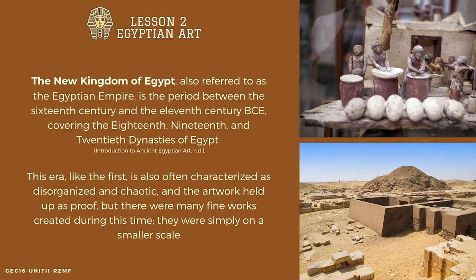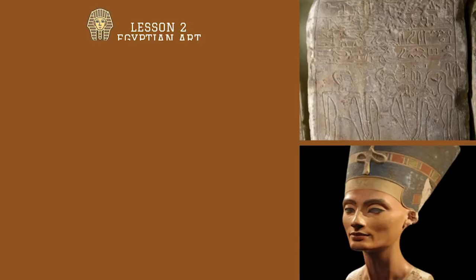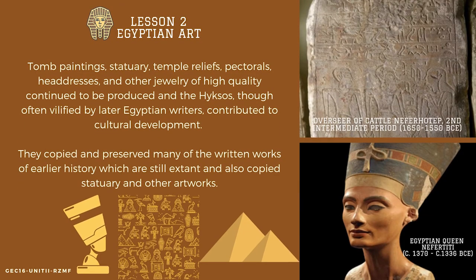The New Kingdom of Egypt, also referred to as the Egyptian Empire, is the period between the 16th century and the 11th century B.C.E., covering the 18th, 19th, and 20th dynasties. This era is often characterized as disorganized and chaotic, and the artwork held up as proof, but there were many fine works created during this time, simply on a smaller scale. Tomb paintings, statuary, temple reliefs, pectorals, headdresses, and other high-quality jewelry continued to be produced. The Hyksos, though often vilified by later Egyptian writers, contributed to cultural development and preserved many written works of earlier history, as well as copying statuary and other artworks.